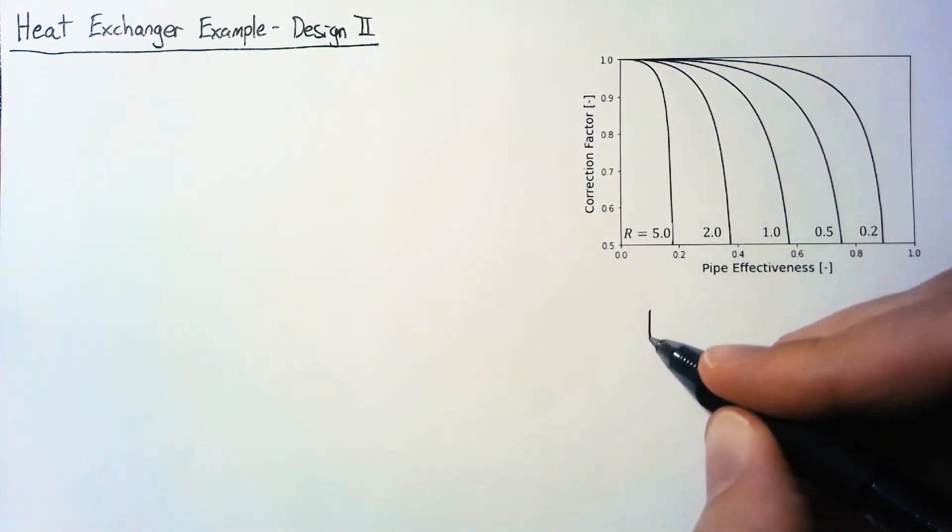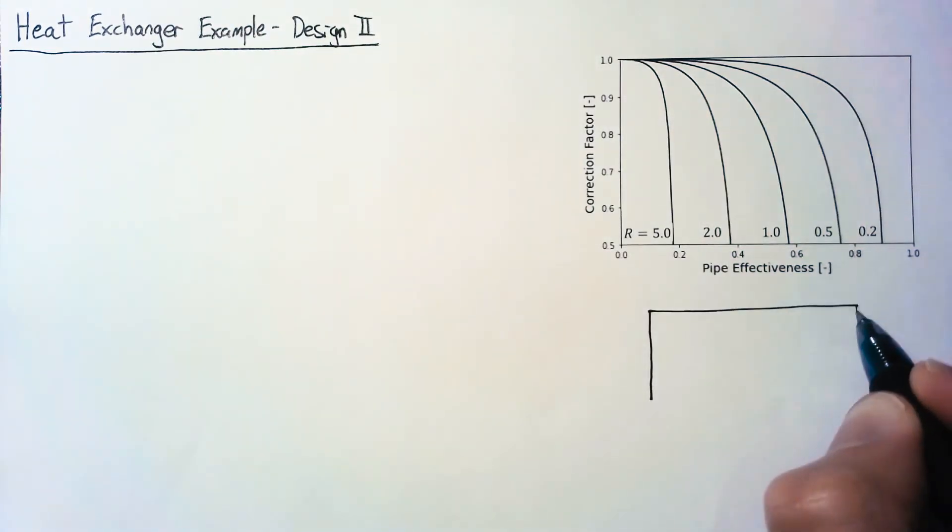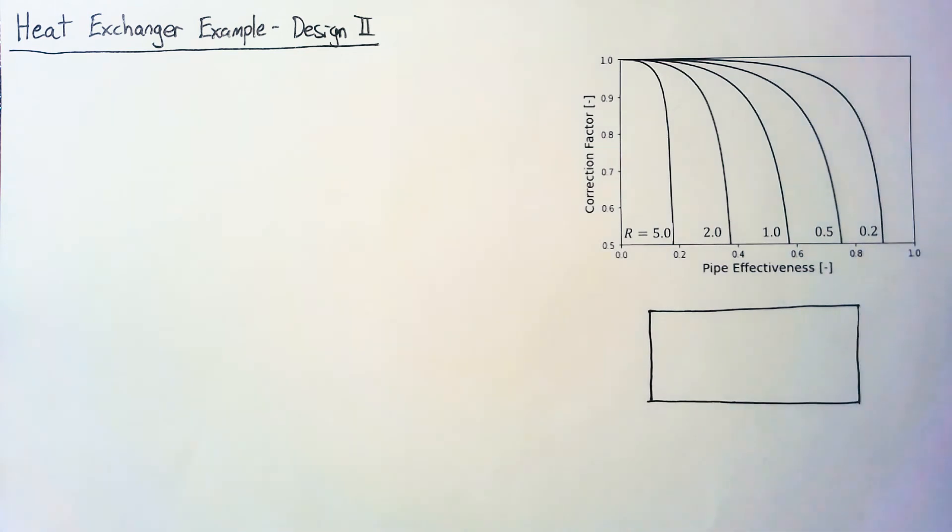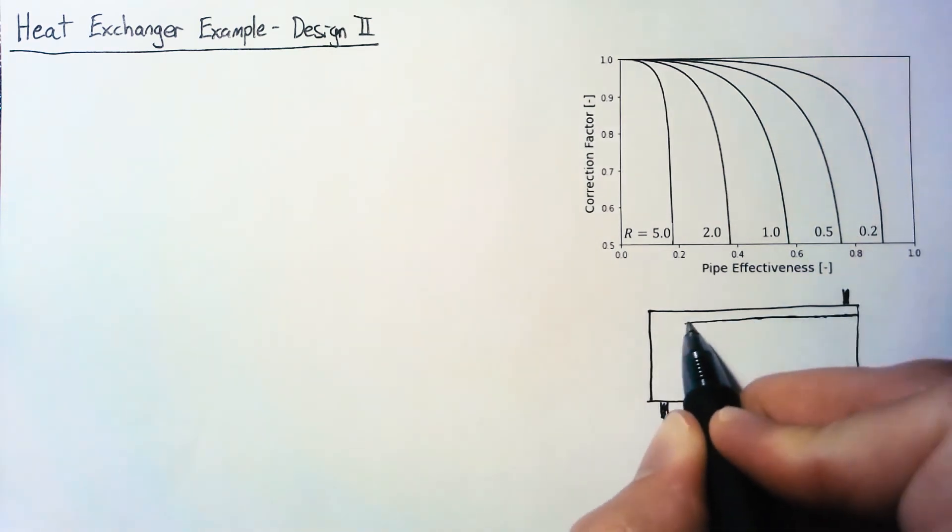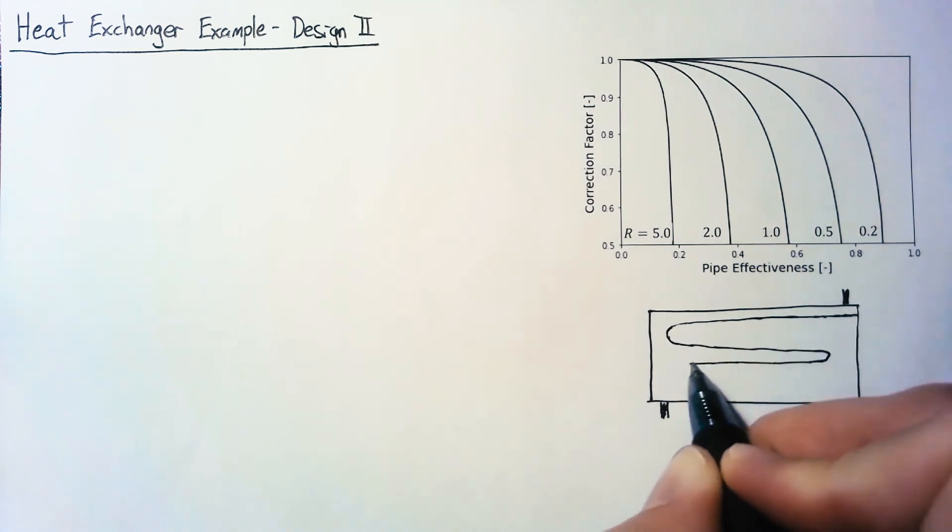So the big difference with this one is the geometry. In this case, we're going to be using a shell and tube heat exchanger. A shell and tube has one fluid that is moving through the shell of the heat exchanger, while another fluid moves through a pipe or tube that is on the inside of that shell.